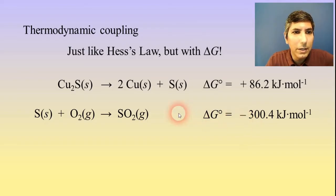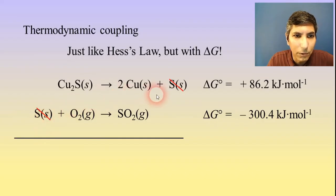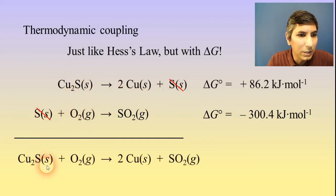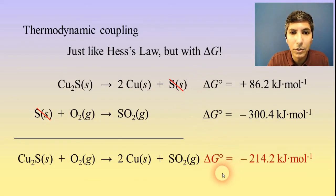So here's the deal. If we take these two reactions and we add them together, so if we add the two reactions together, we can cancel out the sulfurs right there, and when you add them together, we get copper one sulfide solid plus oxygen gas yields two moles of copper and a mole of sulfur dioxide. And to find the delta G of that new reaction, well, since we added the individual reactions together, we have to add those delta G's together as well. And we find that the delta G of this process is very much thermodynamically favored. It's negative 214.2 kilojoules per mole.